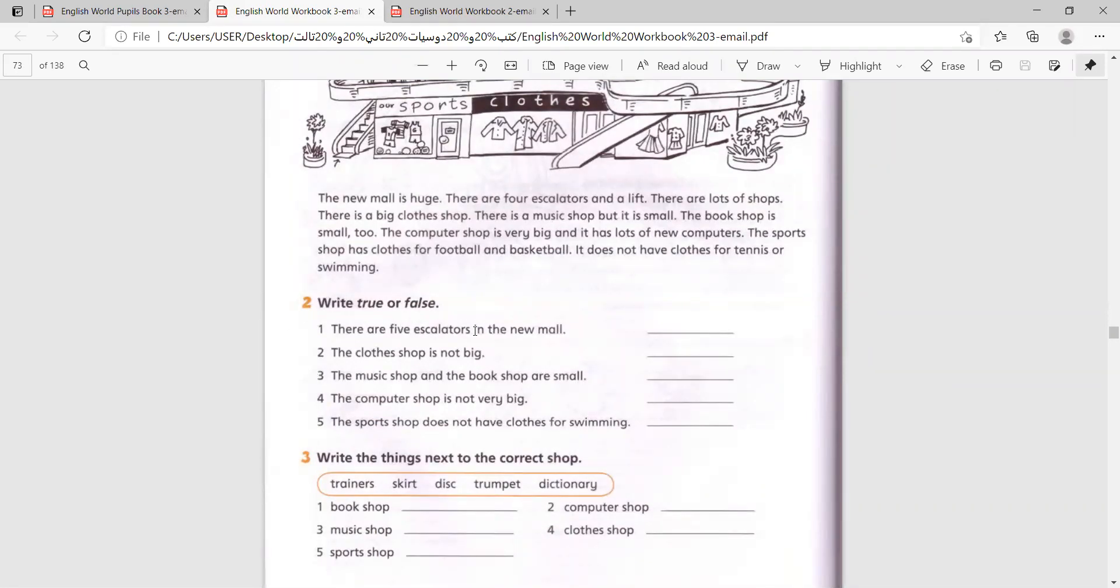There are five escalators in the new mall. What do you think? True or false? False, yeah? False. The clothes shop is not big. False.